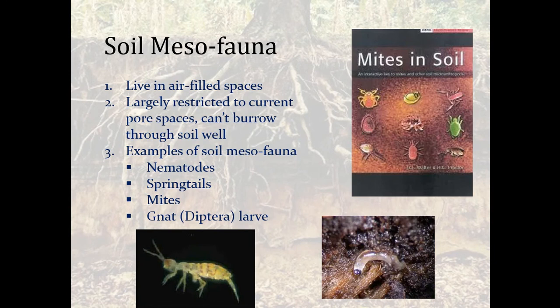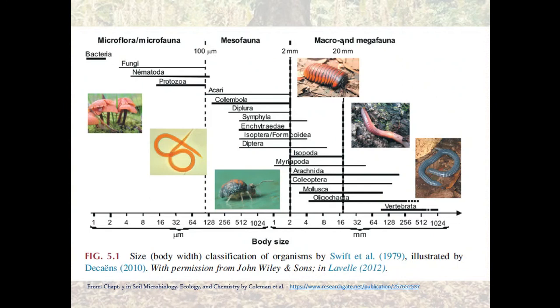Mesofauna live in air-filled spaces, so they are a little bit larger. Think of soil mites or springtails, larger nematodes, and gnat larvae. These are usually restricted to current pore space — they can't really make their own burrows, but they can navigate through burrows that others have made or that form between soil aggregates.